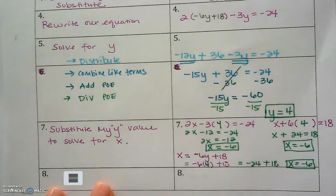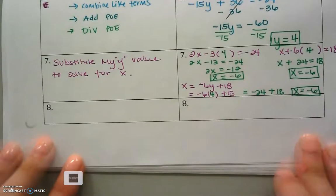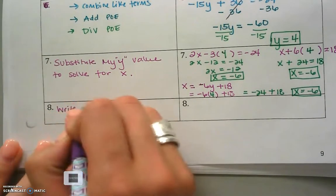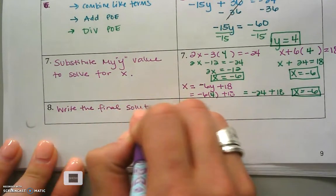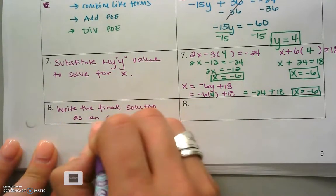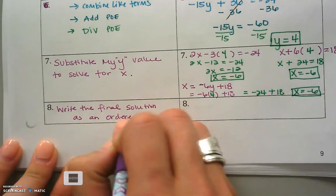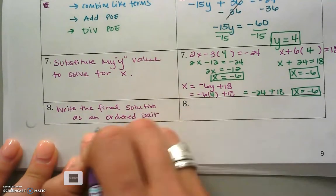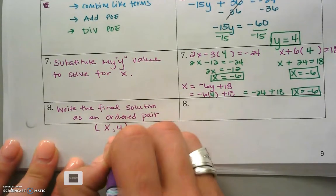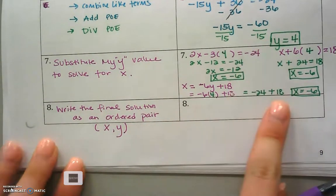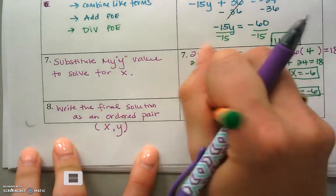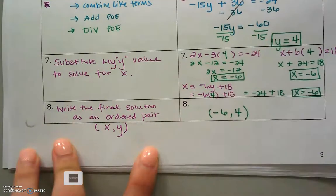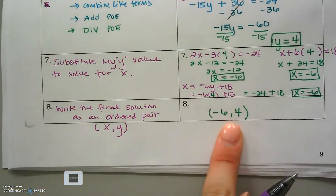Your final answer for a system should always be written as an ordered pair. Remember your ordered pair is x comma y, so don't get confused about what you solved for first. Your answer is always x comma y. So this is going to be negative 6, 4. That is the solution to our system of equations.